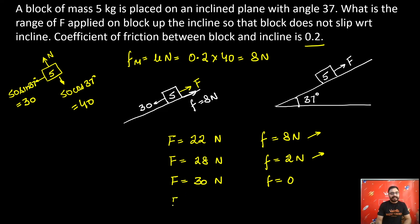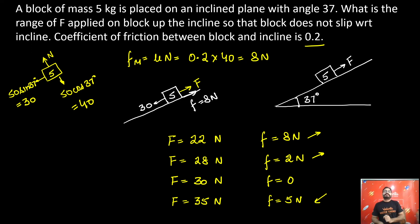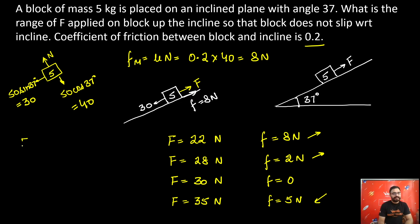Now suppose I increase my force to 35 newtons. With 35 newtons upward and 30 newtons downward, friction will now adjust itself to act downward — 5 newtons in the downward direction — to stop the block from moving upward. Up to 8 newtons of friction is available, so 5 newtons downward is fine. If I apply 38 newtons, then I need 8 newtons of friction downwards.